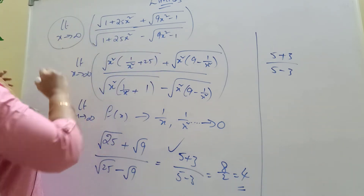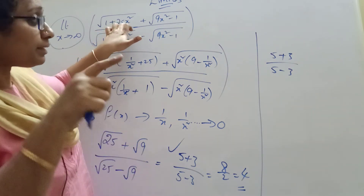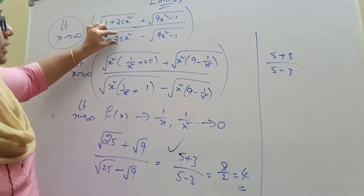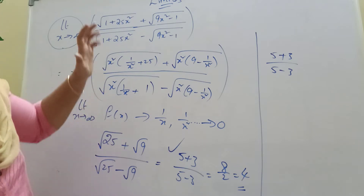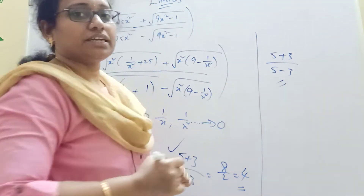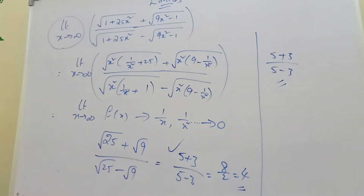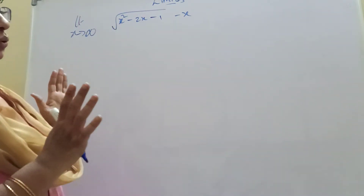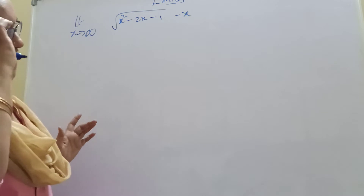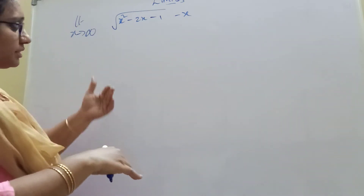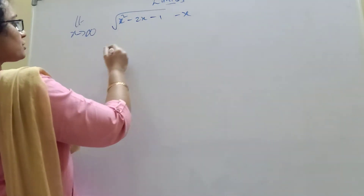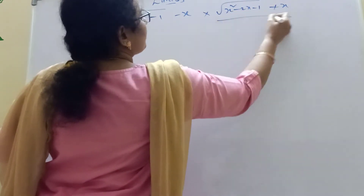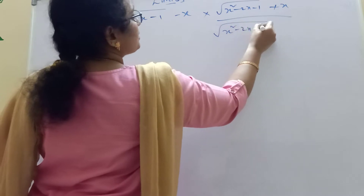Even if there is a limit extension, we will work on the number root 25. Suppose root is less than 5, the problem will be different. Now, the next problem here — if it is root n, the problem is rationalizing. We can rationalize this problem. Here: limit of root of x square minus 2x minus 1 plus x, divided by root of x square minus 2x minus 1 plus x.